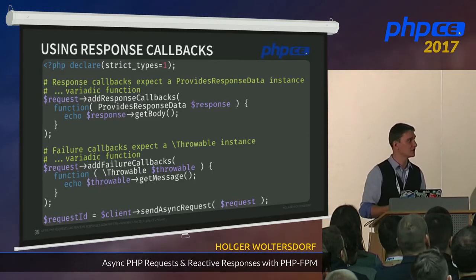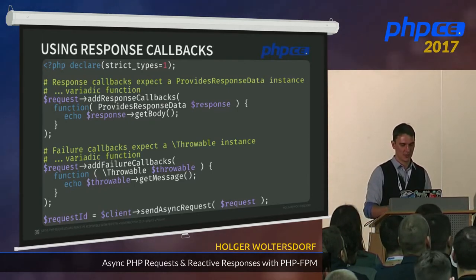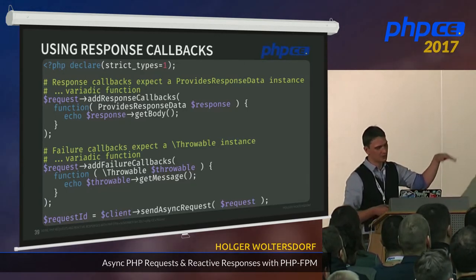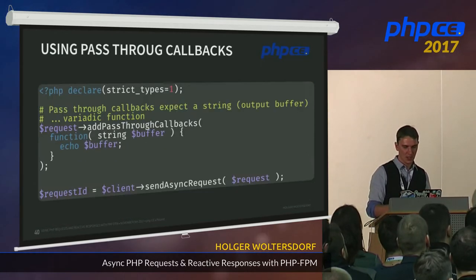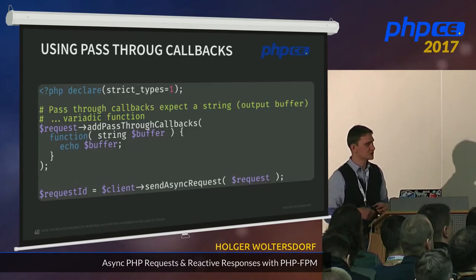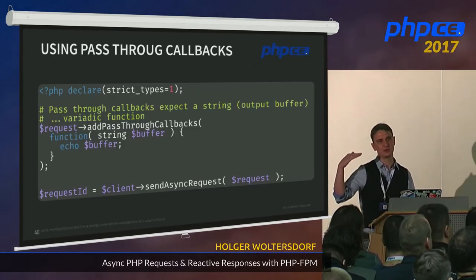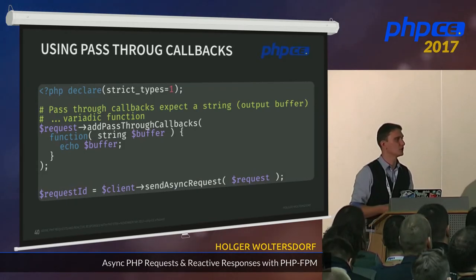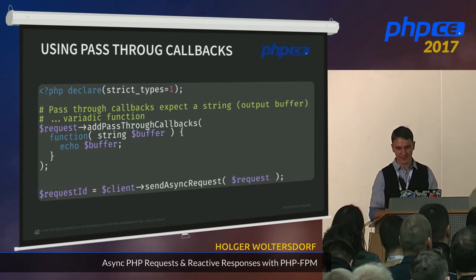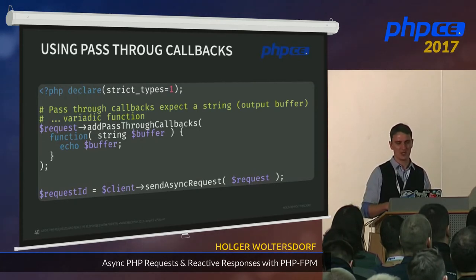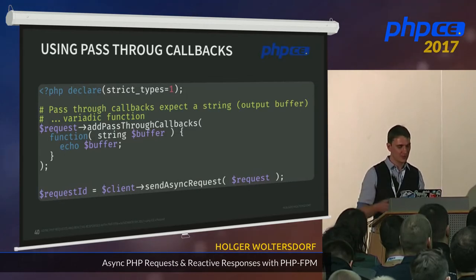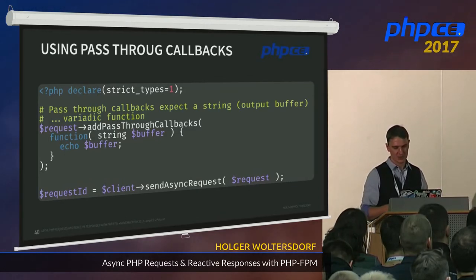I recently added a pass-through callback, which is very handy when a script produces output constantly and you want to see it in real time. For example, if you're calling a background script like a cron job that produces a lot of output, you'll get that output as a buffer in your pass-through callback and can do something with it — like logging or pushing it to the front end of your website.